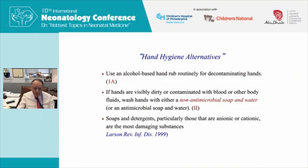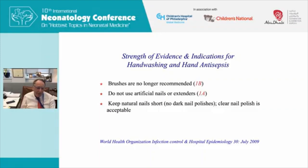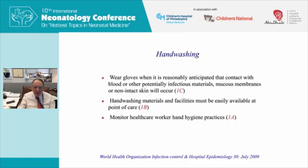We try to avoid strongly anionic or cationic soaps and detergents because they cause redness of the hands — and damaged skin harbors more pathogens. Brushes are no longer recommended, even though surgeons still use them — that's a 1B recommendation. Do not use artificial nails or extenders: we had an epidemic in our NICU published in the New England Journal of Medicine that started with a nurse colonized with Pseudomonas under her artificial nails — when those were finally removed, the epidemic ended. Keep natural nails short, no dark nail polishes, and clear nail polish is acceptable.